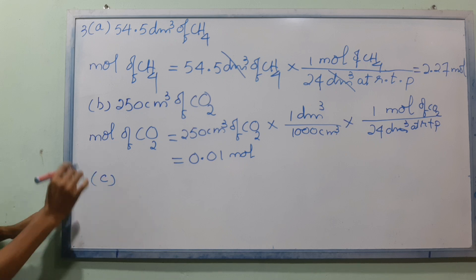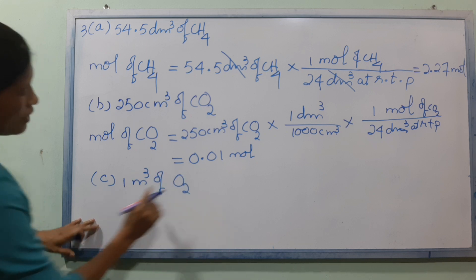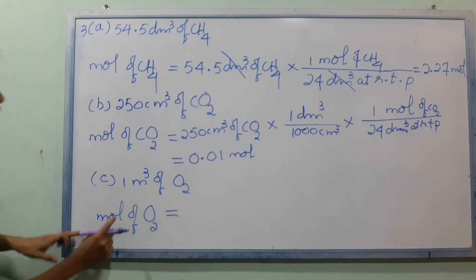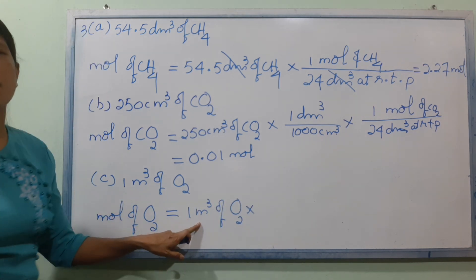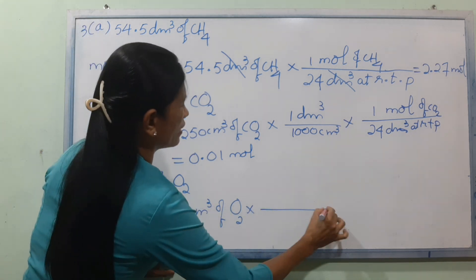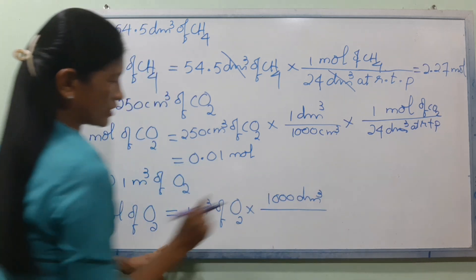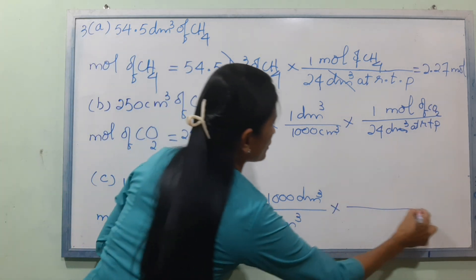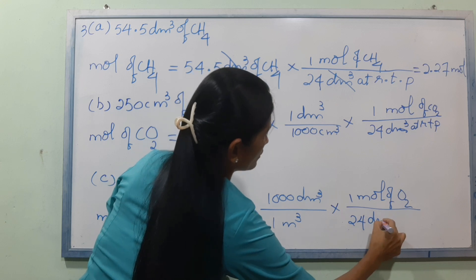Number C: 1 cubic meter. One cubic meter equals 1000 dm³. Using the molar volume at RTP of 24 dm³ per mole, divide 1000 dm³ by 24 dm³ per mole to find the number of moles.